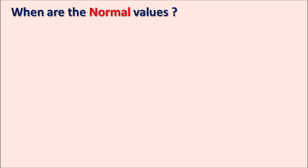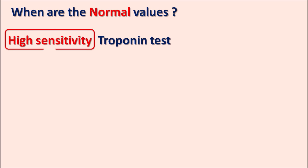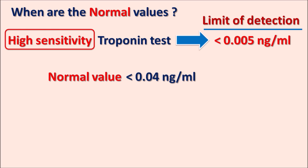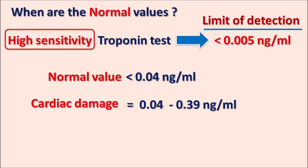What are the normal values? A high-sensitivity troponin test is used to estimate troponin levels, with a lower detection limit of less than 0.005 nanograms per ml, indicating the high sensitivity of this immunoassay method. The normal value is less than 0.04 nanograms per ml. When levels are elevated above 0.04 nanograms per ml, it may indicate cardiac damage. In case of cardiac damage, levels may range from 0.04 to 0.39 nanograms per ml, and in high-risk patients, troponin levels may exceed 0.40 nanograms per ml.